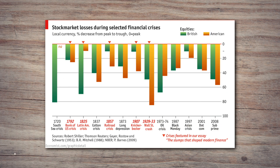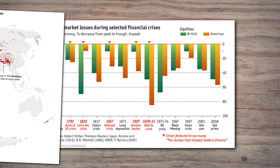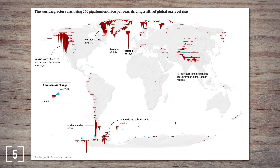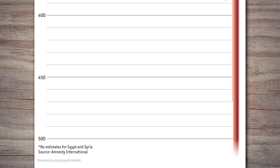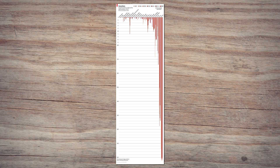Financial crises are bad, so a chart comparing them might have bars pointing down. The loss of glaciers is bad, so they get these triangular bars pointing down. Executions are bad, so the bars presenting them in this chart point down. While not as stark as the Iraq chart at first glance, this one has its own way of getting to you with the choice of scale. It really drives home the difference in the number of executions in Iran and China compared to the rest of the world.